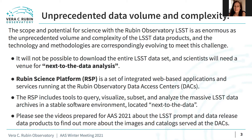It will not be possible for individuals to download the entire LSST dataset to their local computer. Instead of bringing the data to themselves, scientists will need to bring their analysis to the data. The venue for this is the Rubin Science Platform, or RSP. The RSP is a set of integrated, web-based applications and services running at the Rubin Observatory Data Access Centers, or DACs. The RSP will include tools to query, visualize, subset, and analyze the massive LSST data archives in a stable software environment located next to the data.